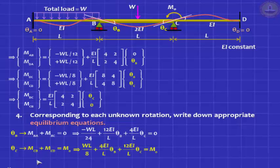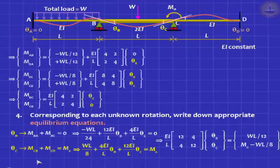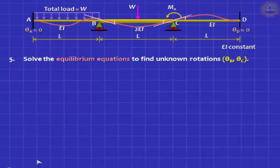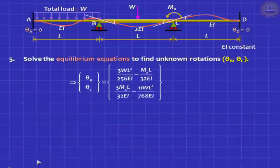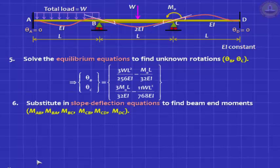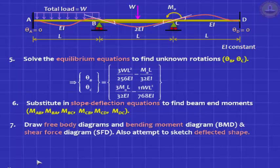Solve the equations to find theta B and theta C — in this case they work out to specific values, but the important thing is the concept. Substitute these values into the slope deflection equations to get all end moments, draw the free body diagrams, then draw the bending moment diagram and the shear force diagram.